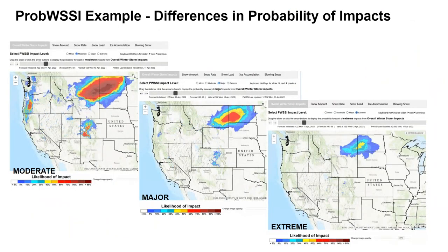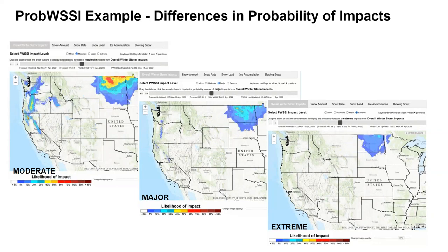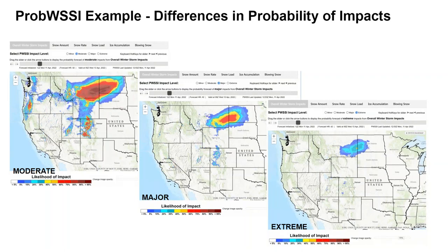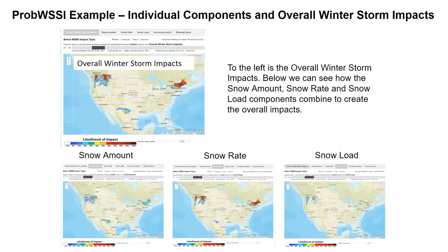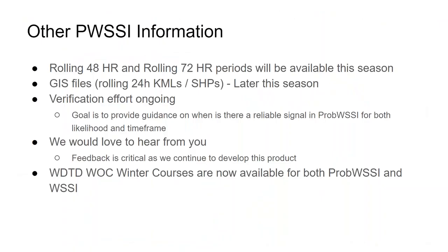This shows the various envelopes from moderate, major, and extreme from that big storm in mid-April last year across the Dakotas. Likewise, this is an example of how multiple components can make up the overall impact — in this case, snow amount and snow rate are the primary drivers. We're going to have rolling 48-hour and rolling 72-hour windows available on the PROB WSSI website later this season, hopefully by Thanksgiving. We're also going to have GIS files for the rolling 24 hours in both KML and shapefile. There's a large verification effort ongoing that Dana has helped lead, to provide guidance on when there's a reliable signal from PROB WSSI and when it's performing best.